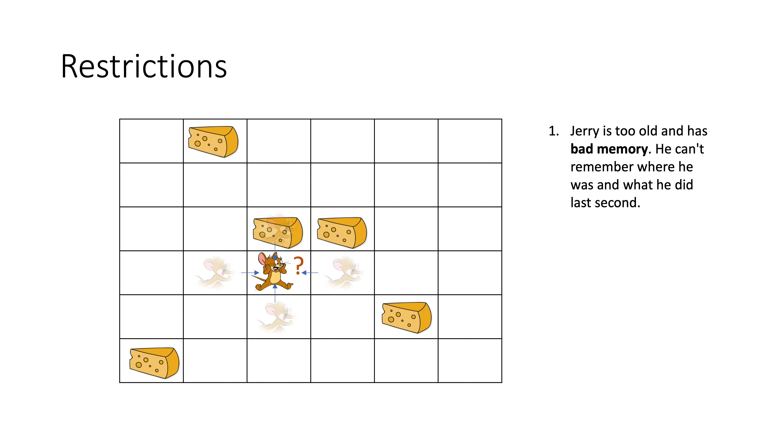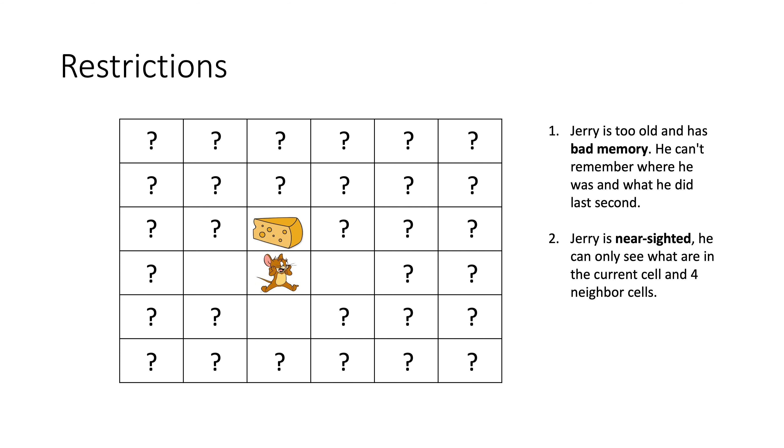Now, let's add some restrictions and make the game interesting. First, Jerry is too old and has bad memory. He can't remember where he was and what he did last second. And second, Jerry is nearsighted, he can only see what are in the current cell and 4 neighbor cells.